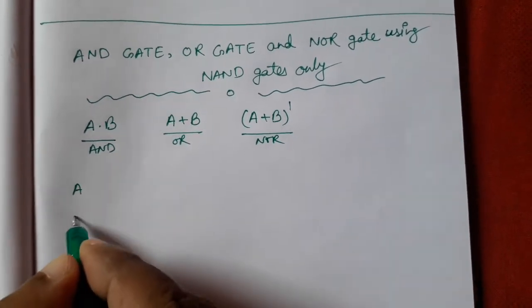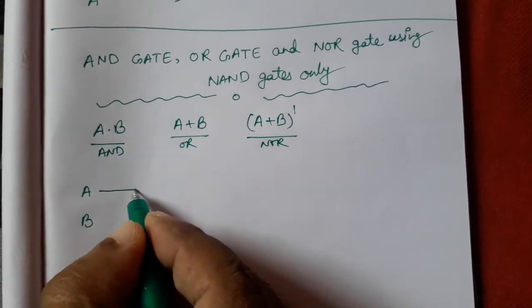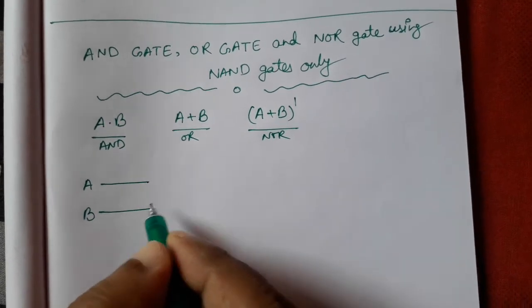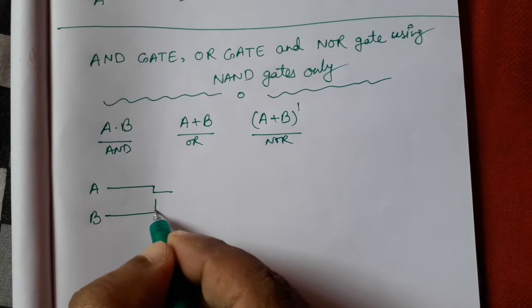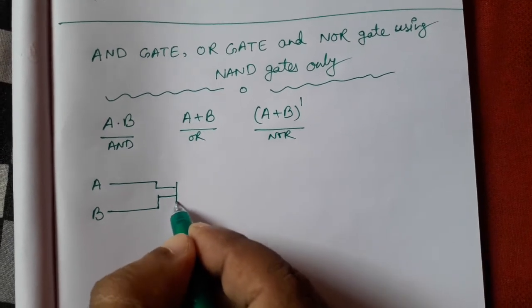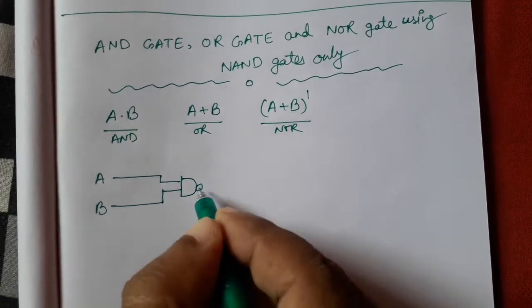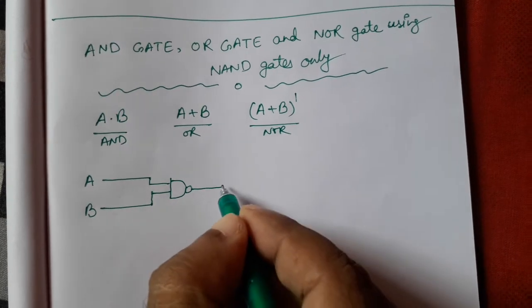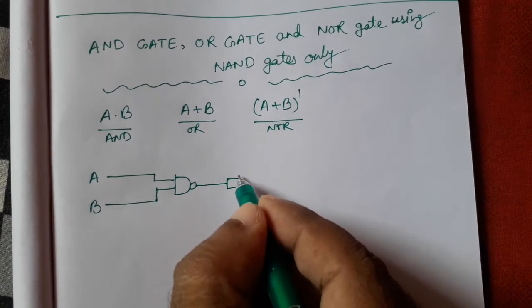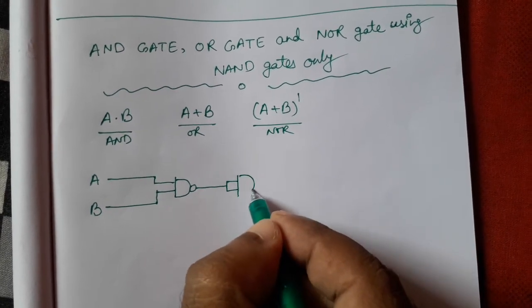So let's see. First we will take A and B. So first from A and B, we will add one NAND gate. We know that NAND gate is also known as universal gate. Then again we will add another NAND gate.